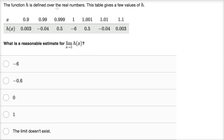The function h is defined over the real numbers. This table gives a few values of h — for different x values, what is the value of h of x? What is a reasonable estimate for the limit of h of x as x approaches one?